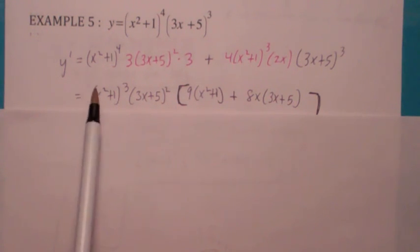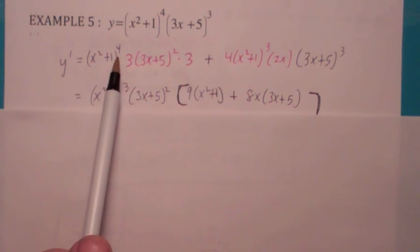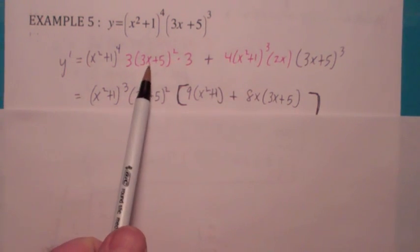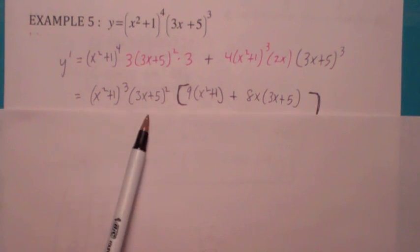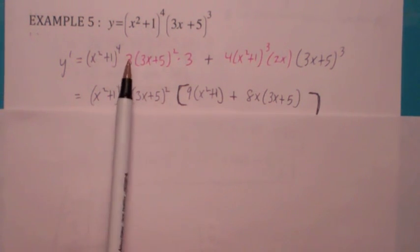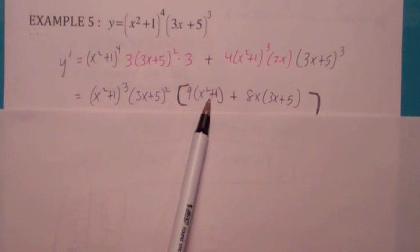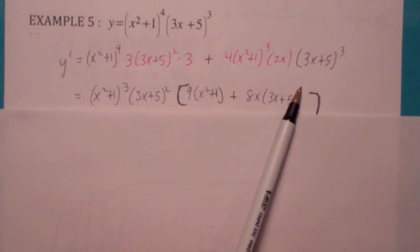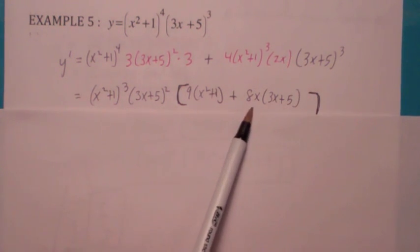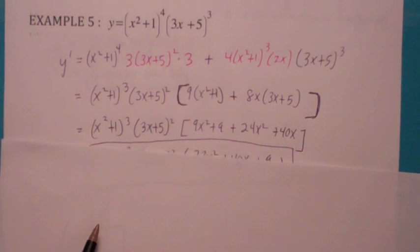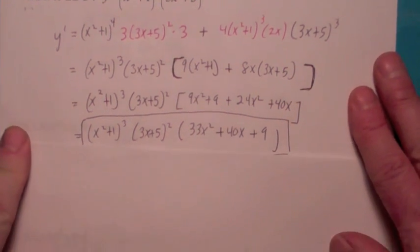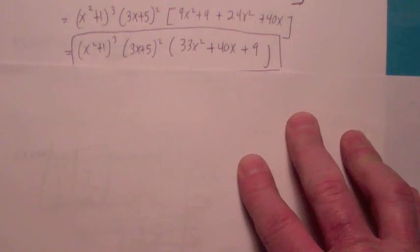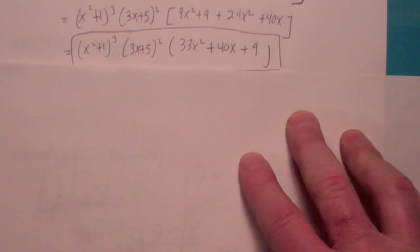Sometimes there's serious factoring here. You can take out the greatest power of x squared plus one — this has x squared plus one to the fourth, this has x squared plus one to the third, so take out x squared plus one to the third. This has three x plus five squared, this has it to the third, so take out three x plus five squared. If you do that to the first one, you still have a nine and one more power of x squared plus one. From the second one you have eight x and one more power of three x plus five. Inside the square parentheses, multiply that out and combine. So the final answer is x squared plus one to the third times three x plus five squared times the quantity thirty-three x squared plus forty x plus nine.